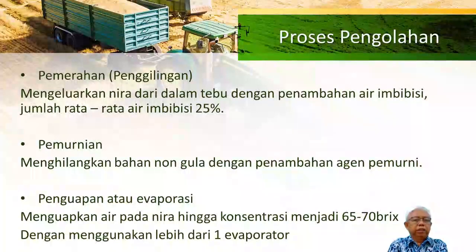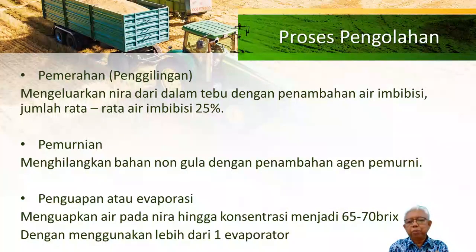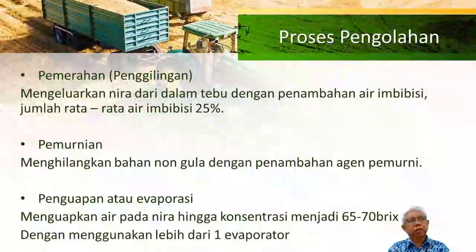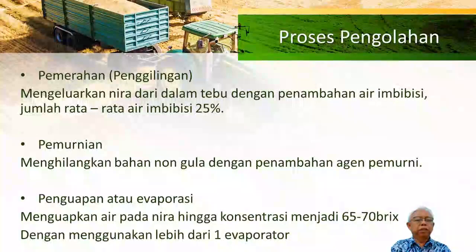Secara detail, dari milling station ini tujuannya adalah mengekstrak atau mengeluarkan nira dari batang tebu dengan penambahan air imbibisi. Berapa air imbibisinya sebenarnya perlu dioptimasi — ini sangat tergantung pada mesin yang dipakai dan tebu yang dipakai. Barangkali tebu yang kita hasilkan juga punya karakteristik tertentu. Tentunya ini perlu optimasi di pabrik. Secara umum itu sekitar 25%.